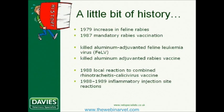Feline injection site sarcomas have only been recognised in the last 25 years. The history is relatively interesting. It started in the United States in 1979 when the prevalence of feline rabies was noted to be on the rise, attributed to a low proportion of domestic cats being vaccinated and a large outbreak of wildlife rabies. This led to increased post-exposure prophylaxis in human medicine. In 1987, the state of Pennsylvania enacted a law requiring all cats to receive rabies vaccination, resulting in an increase in subcutaneous rabies vaccination across the entirety of America.